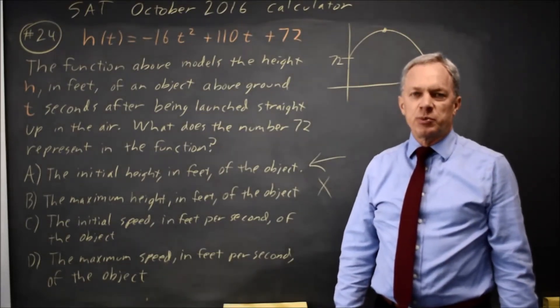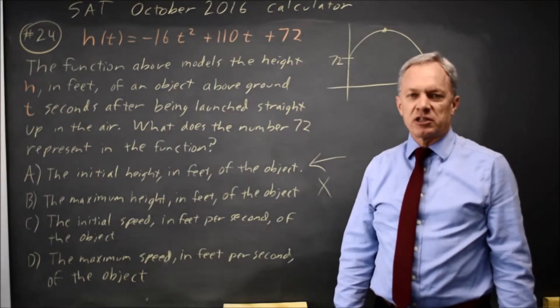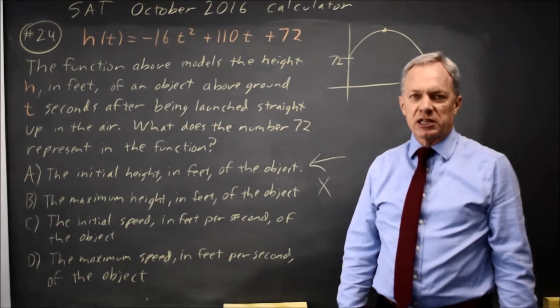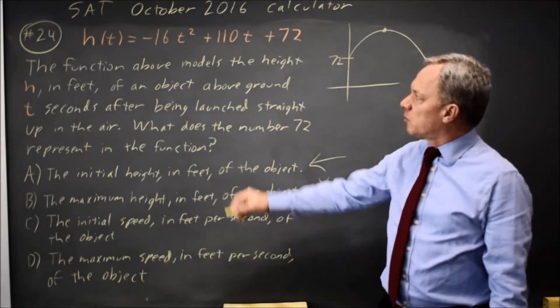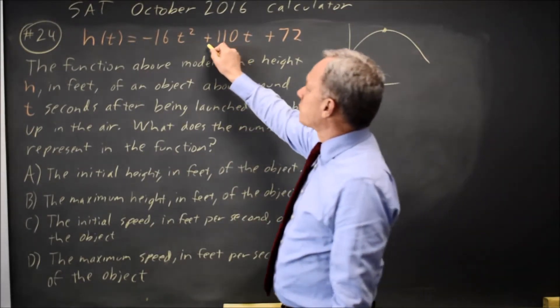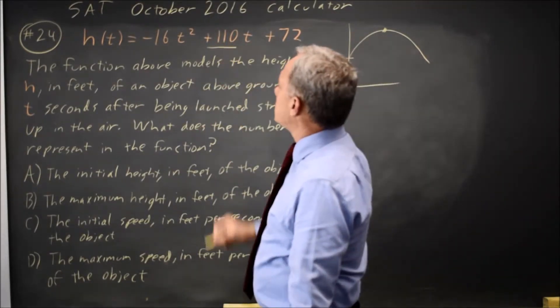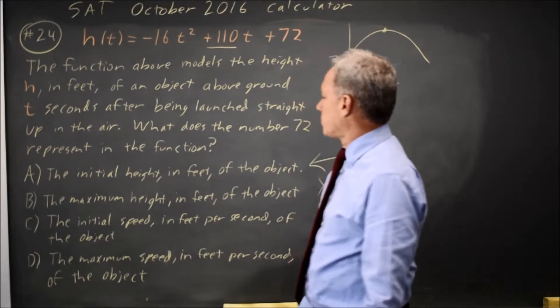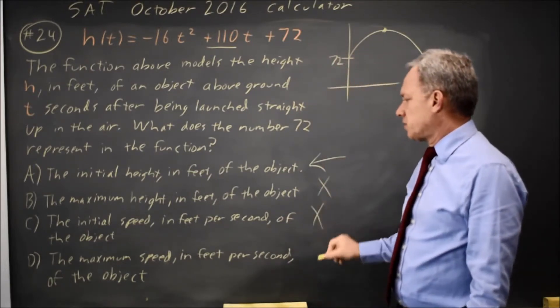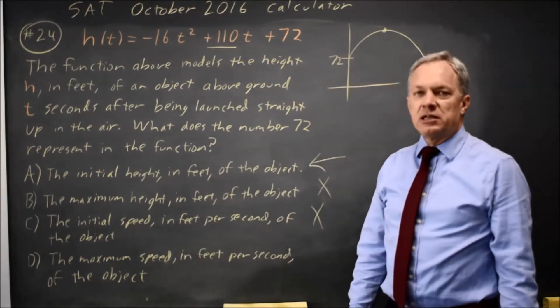Choice C is initial speed. You may not have covered this yet in your math classes, but the initial speed is the t coefficient here, which is 110. So that's not correct.